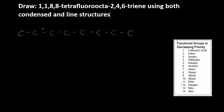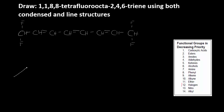Octatriene — oct means 8 carbons. Let's make this carbon 1. So carbons 1 and 8 each get 2 fluorines. Between carbon 2, carbon 4, and carbon 6, there are double bonds. Everything else is just hydrogens — one hydrogen at each of those remaining positions. That's my condensed structure finished.